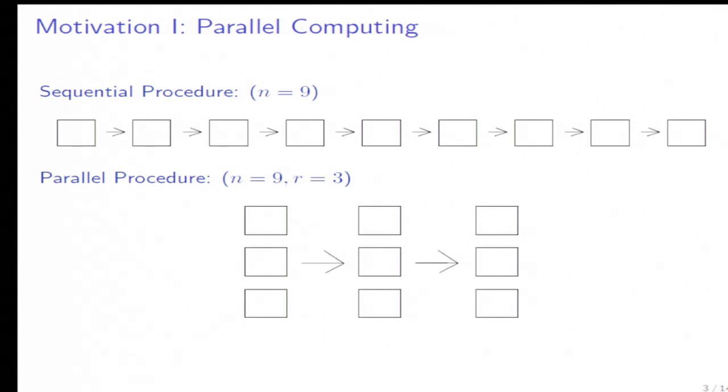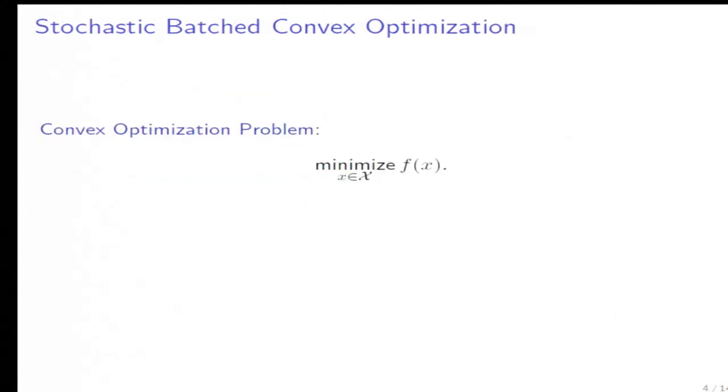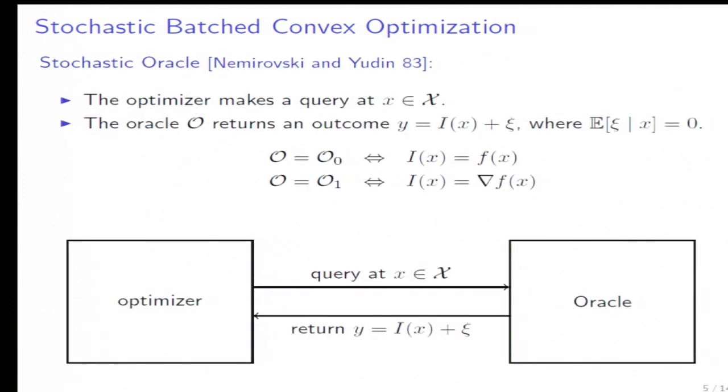Parallel computing has a lot of potential. With this motivation in mind, we frame this problem into a more general setting called stochastic batch convex optimization. We only consider convex optimization: minimize some convex function f subject to some constraint where x lies within a convex set.